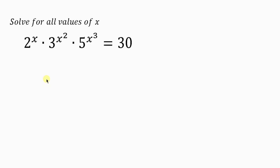What's going on everybody? Welcome back to my YouTube channel. Now look at this — we have a beautiful question on the board that we're going to be solving. The question says: solve for all values of x such that 2 to the power of x times 3 to the power of x squared times 5 to the power of x cubed is equal to 30.